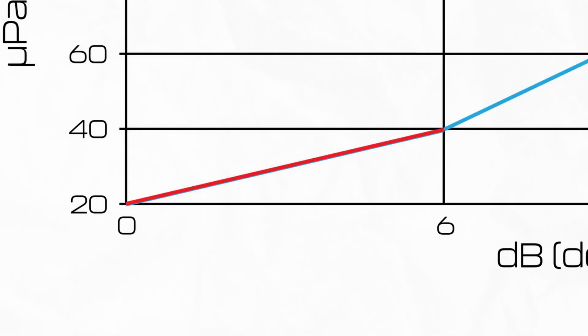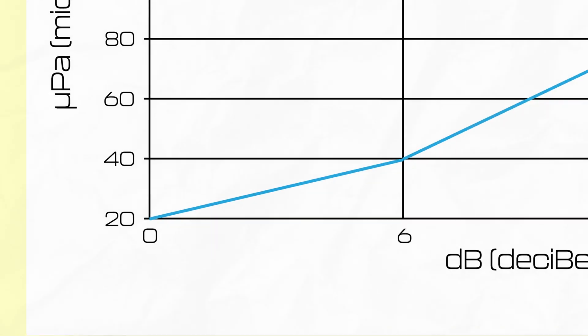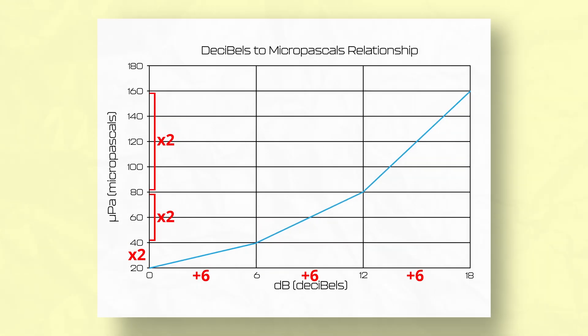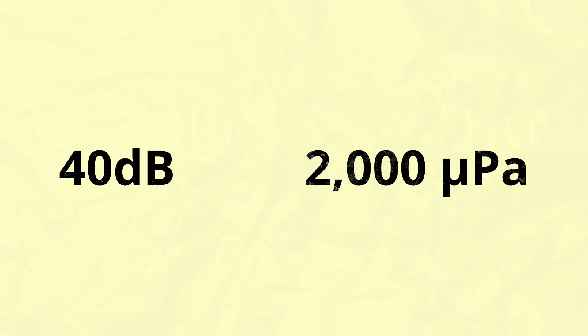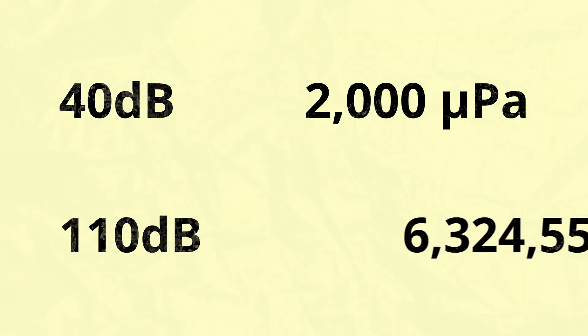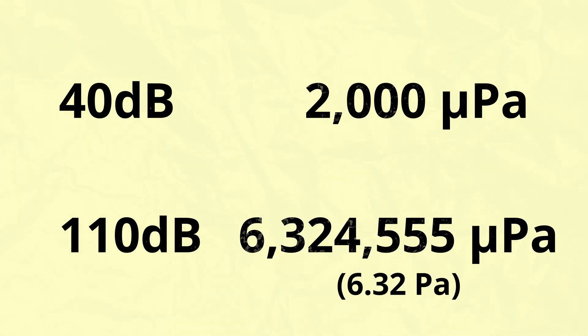Every 6 dB jump in sound pressure level is approximately equivalent to a doubling of the sound pressure. The actual scientific measurement of pressure is in pascals. For example, 0 dB, which is the threshold of hearing, is 20 micropascals. If we jump to 6 dB SPL, then it's roughly 40 micropascals. 12 dB SPL is roughly 80 micropascals. 18 dB SPL is roughly 159 micropascals, and so on. The issue is that if we use pascals, our numbers would have a huge spread — from whisper volume at about 40 dB, which is 2,000 micropascals, to loud concert volume at about 110 dB SPL, which is 6,324,555 micropascals, or 6.32 pascals.